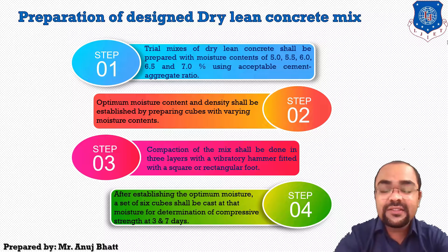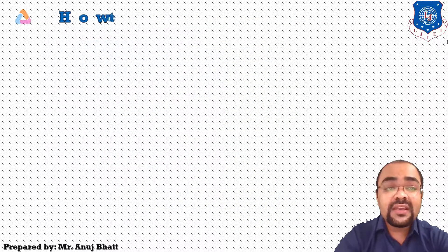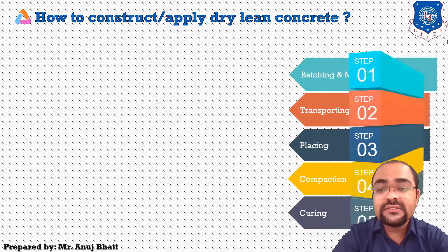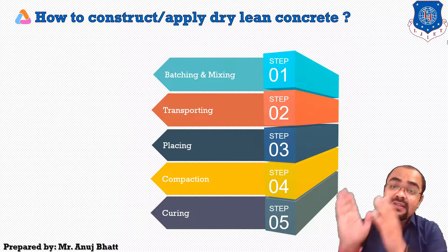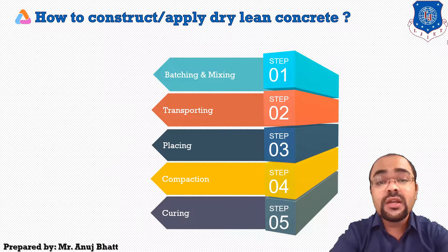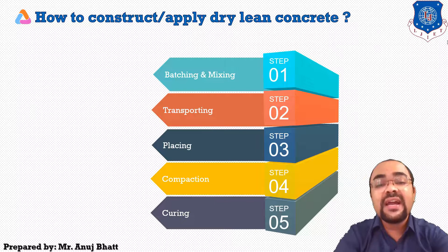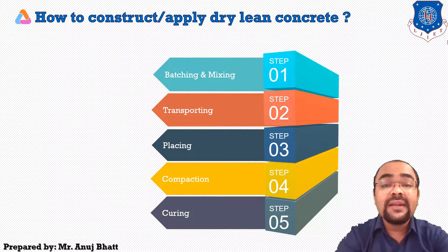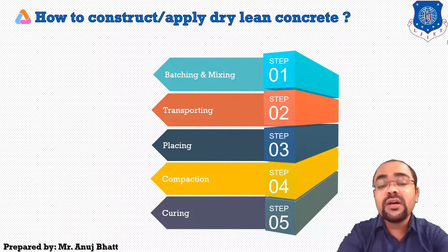After designing the concrete mix, the next step is how to apply DLC on the road surface. There are five steps: batching and mixing, transporting to site, placing the dry lean concrete, compacting the top layer, and curing. After curing, that particular road surface can be opened to traffic.